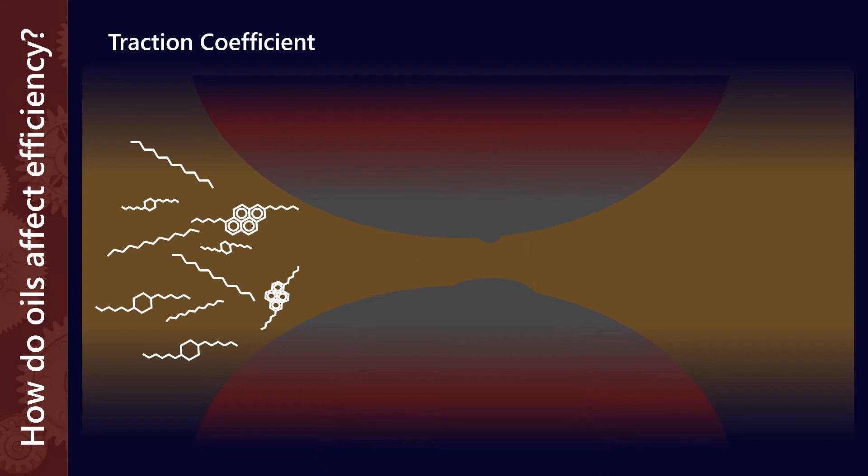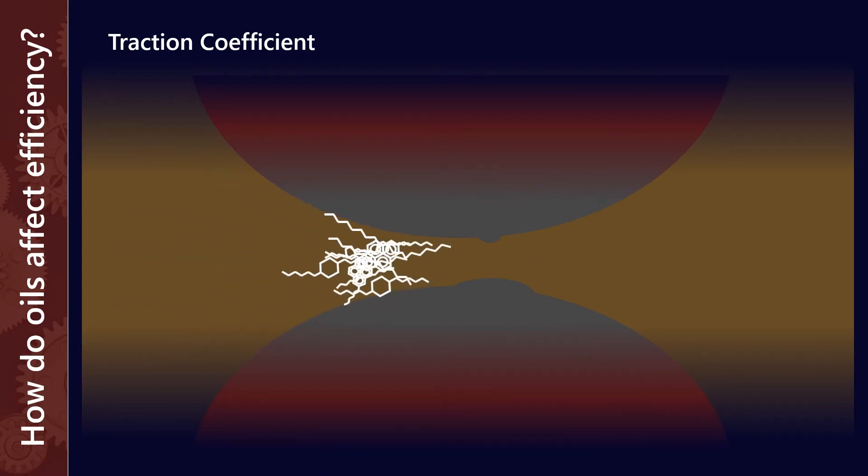As they try and squeeze through that gap, these lubricants are going to get forced together. In a typical mineral oil, where you have a range of different molecular shapes and sizes, their capacity to slide past each other, that is effectively the traction coefficient. It's almost like a measure of the internal friction of the lubricant.